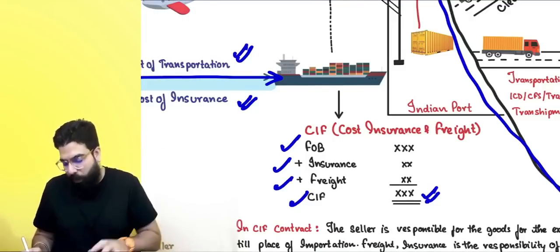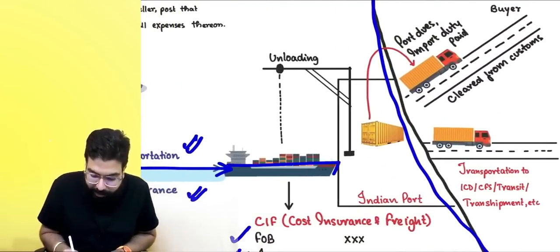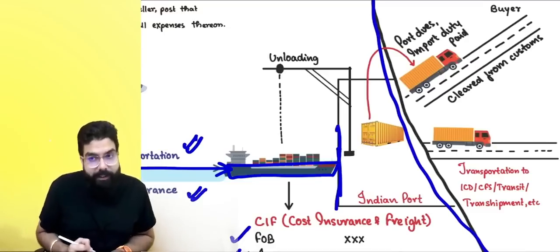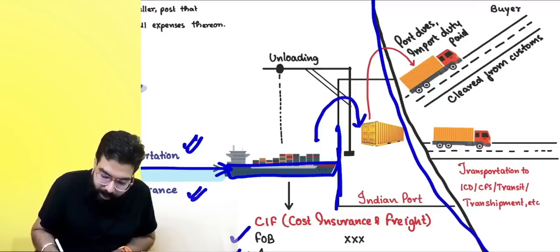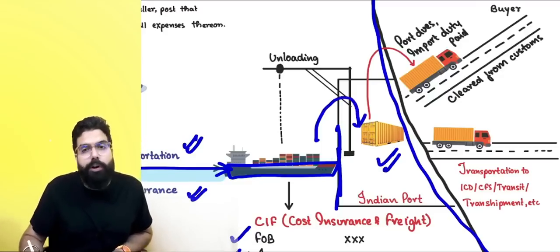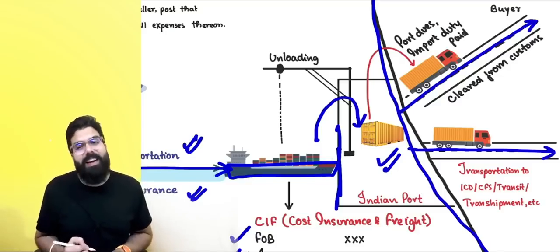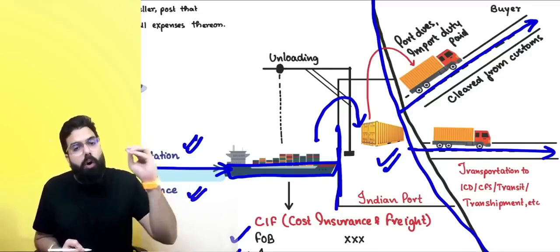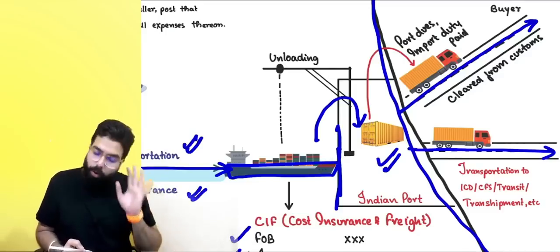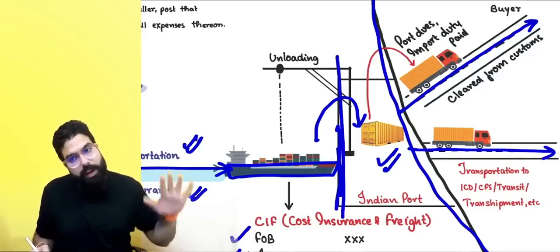CIF is the value on which you have to pay custom duty. Always remember: till the ship hits the port, all costs are to be included. Once the ship hits the port, unloading charges, Indian port charges, port dues, transportation to ICD/CFS, or transshipment costs will not be included. CIF is the value on which custom duty is payable.